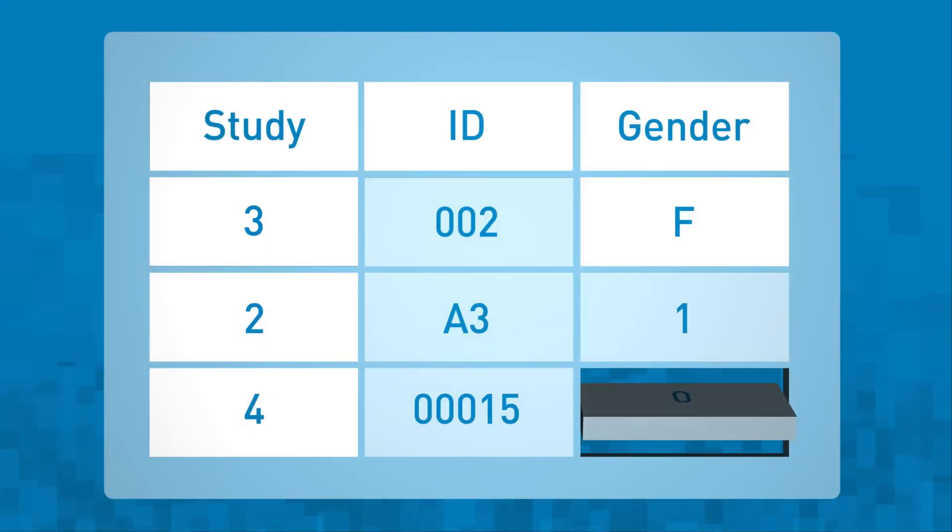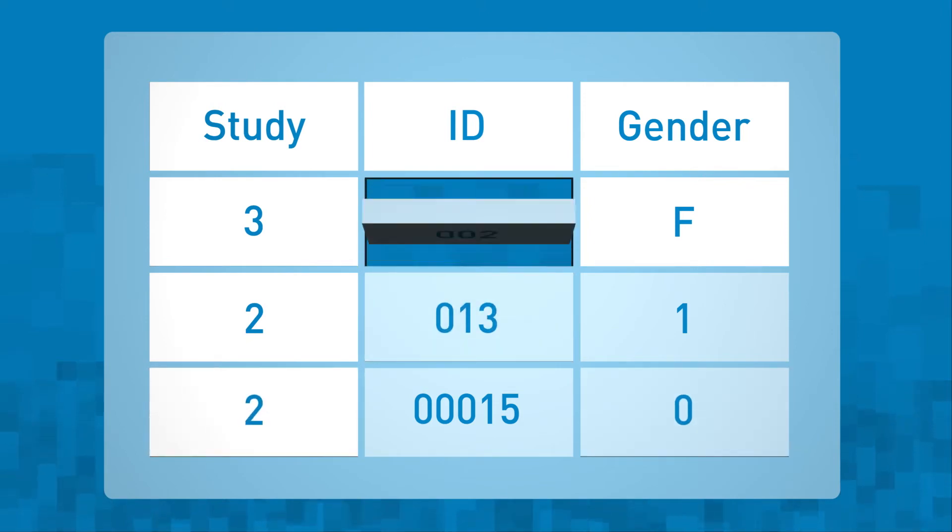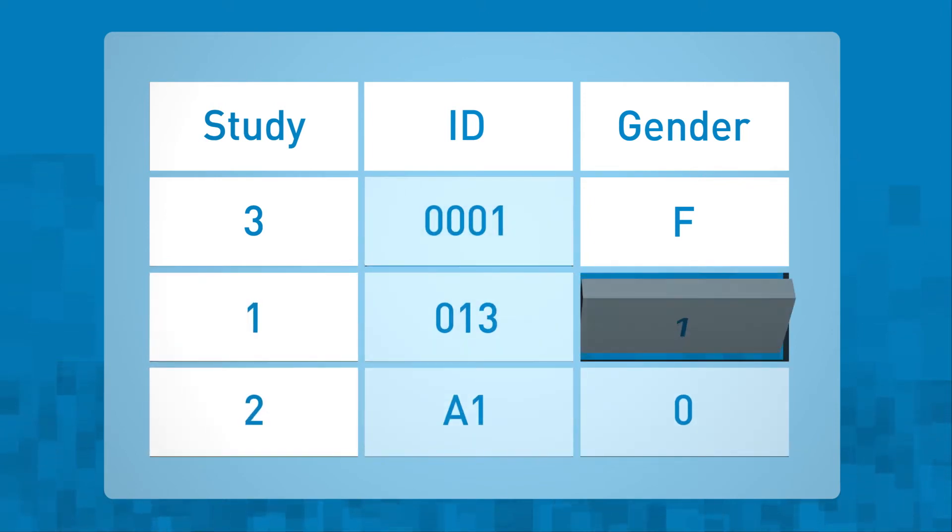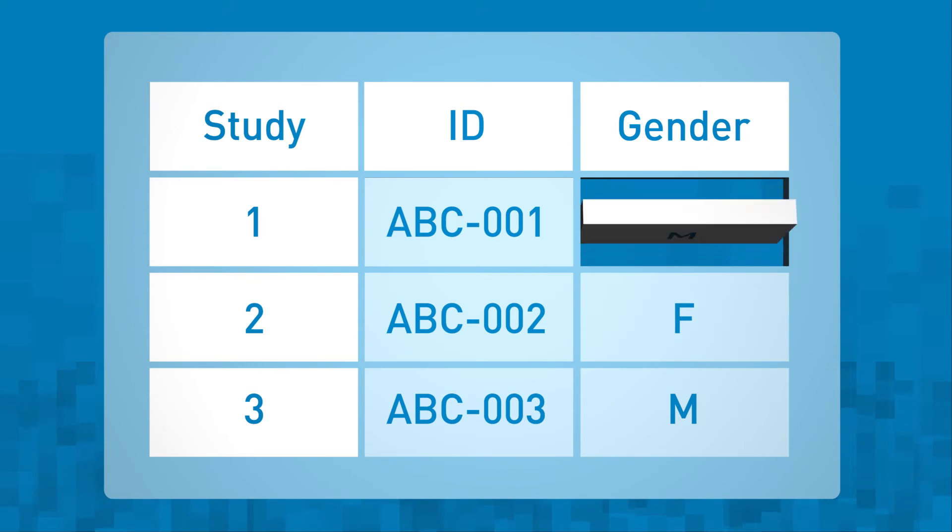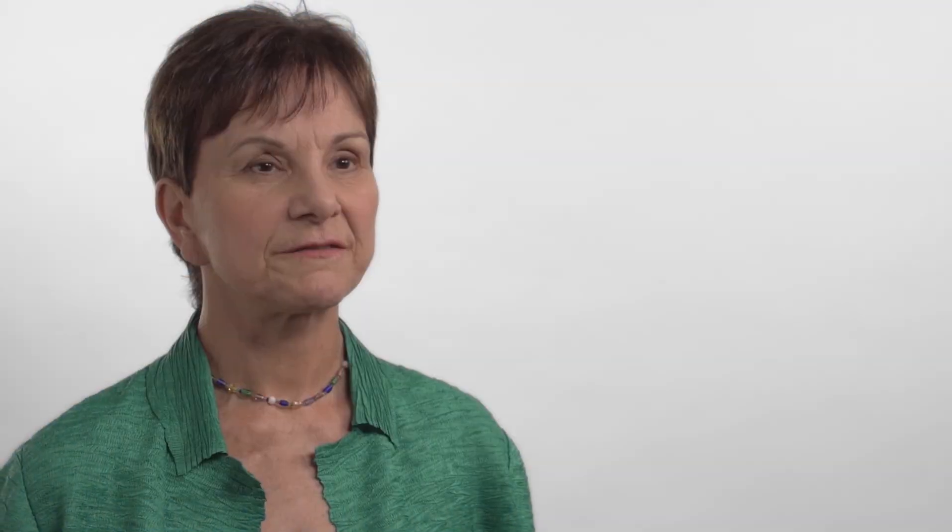We must figure out how to align previously existing data into standards and how to make sure future data is collected in a standardized way. The solution is to develop a Rosetta Stone that will allow researchers to answer a question once and receive results from many different sources using a common agreed-upon structure or a common data or information model.